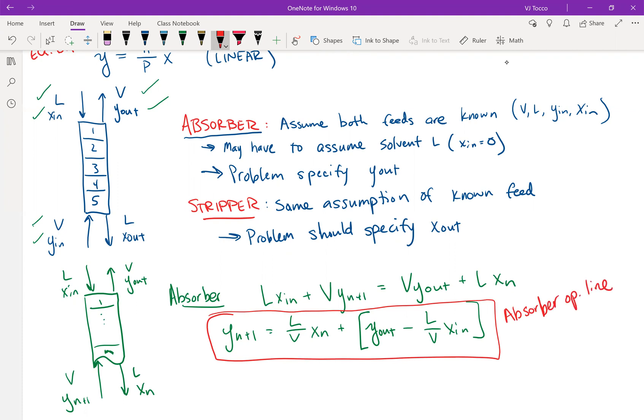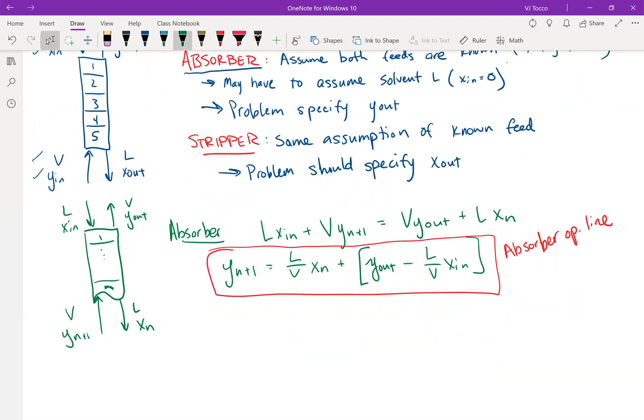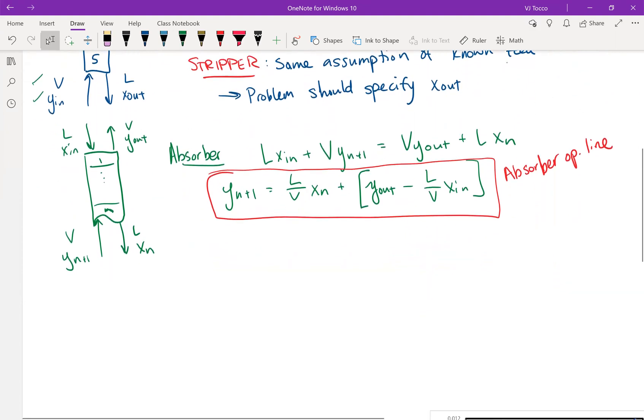Now just because an absorber typically has a specification for y_out, it doesn't mean that you will always use this equation for an absorber every time. Say for some odd reason, it could be possible that you have an absorption problem, but you know x_out instead of y_out, then you would use the other form of the equation. You would not use this form of the equation.